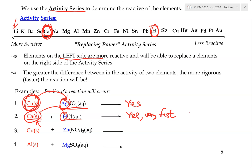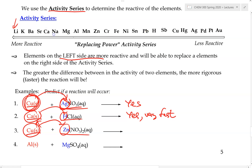Example 3: copper element reacting with zinc nitrate. If anything is going to happen, it would be the copper replacing the zinc — metal replacing metal. Looking at the activity series, copper is to the right of zinc, meaning copper is less reactive than zinc. Therefore copper cannot replace zinc, and thus there is no reaction.